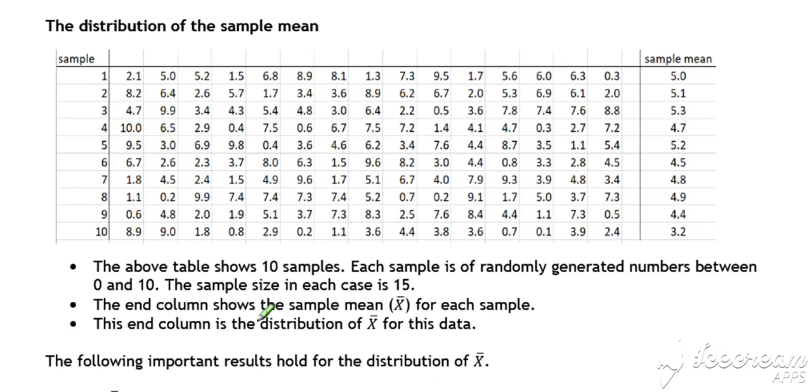So to understand the Central Limit Theorem, you really need to first of all understand exactly what we mean by the distribution of the sample mean. So the table below provides us with an opportunity to explain that. So we've got 10 different samples of 15 numbers. So our sample size is 15, and these are just randomly generated numbers between 0 and 10.